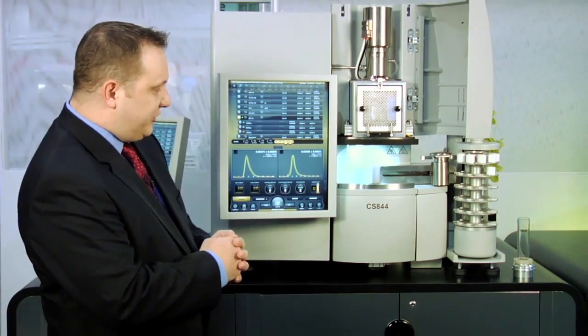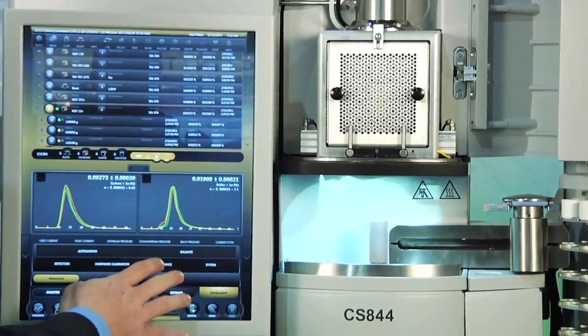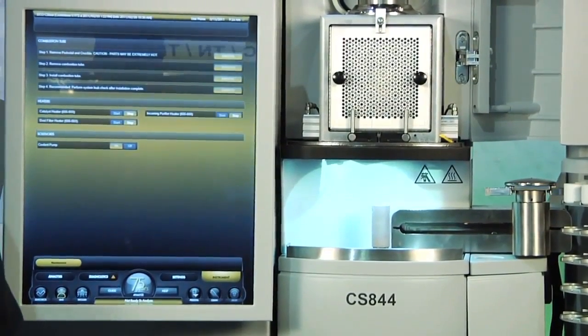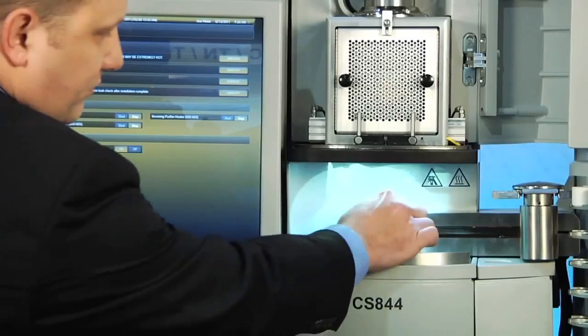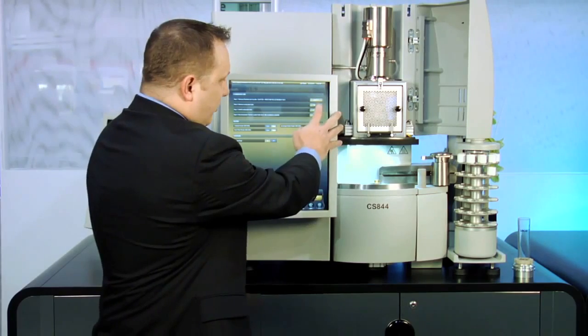I'm going to go into the instrument software and enter into a maintenance section. This is going to give me four prompts. The first would be to remove the pedestal and crucible if present. The second would be to remove the combustion tube itself with a single execute command.